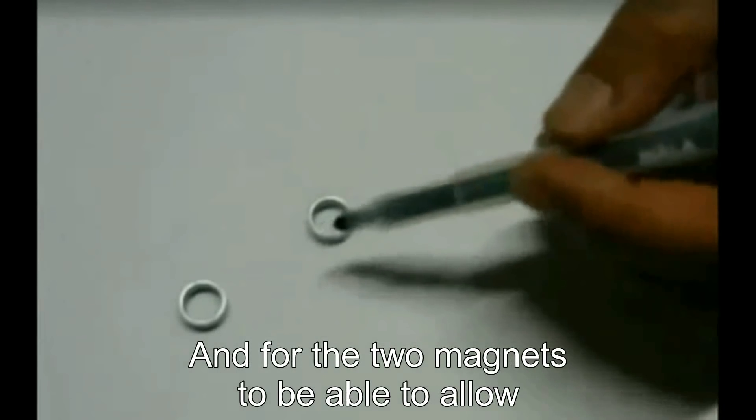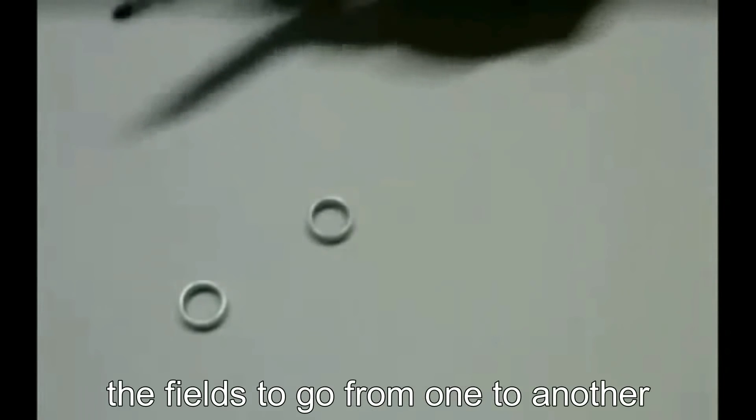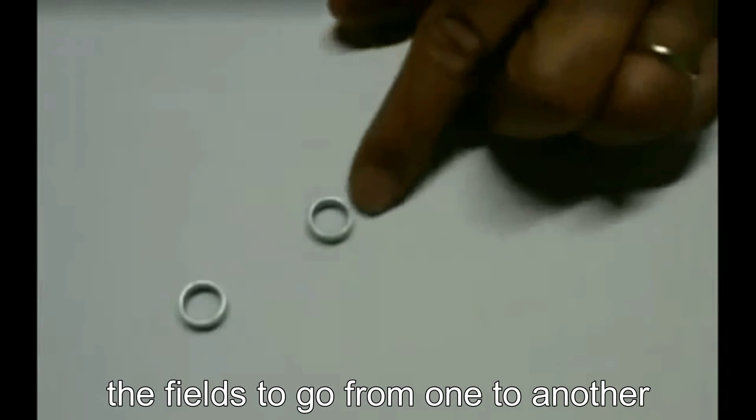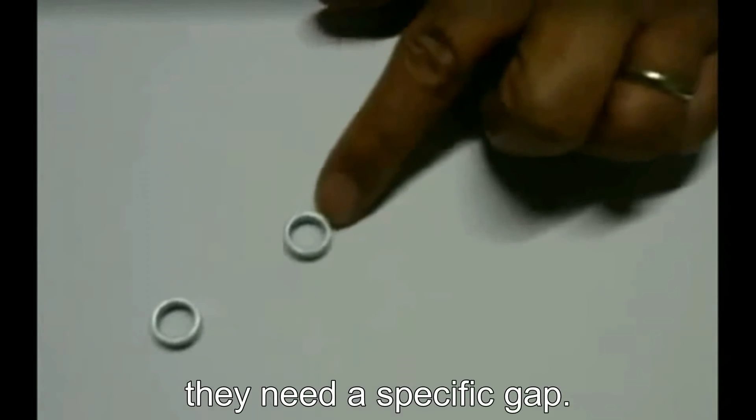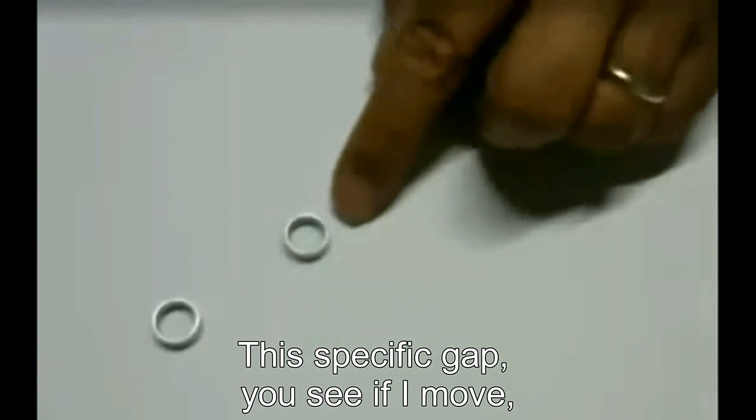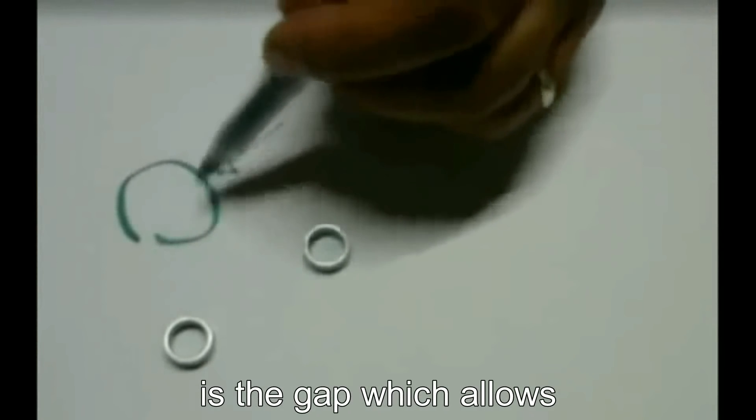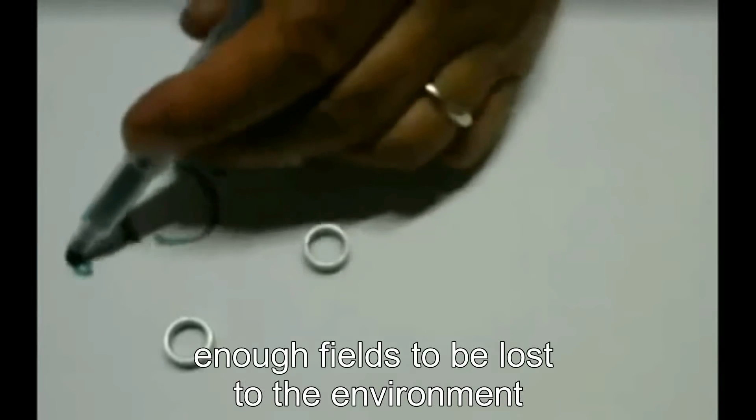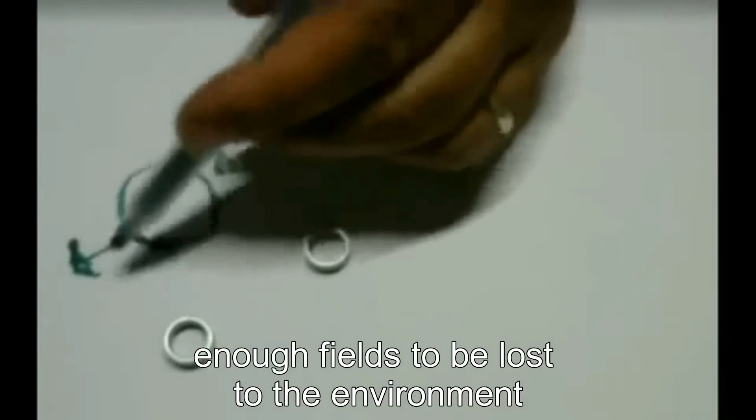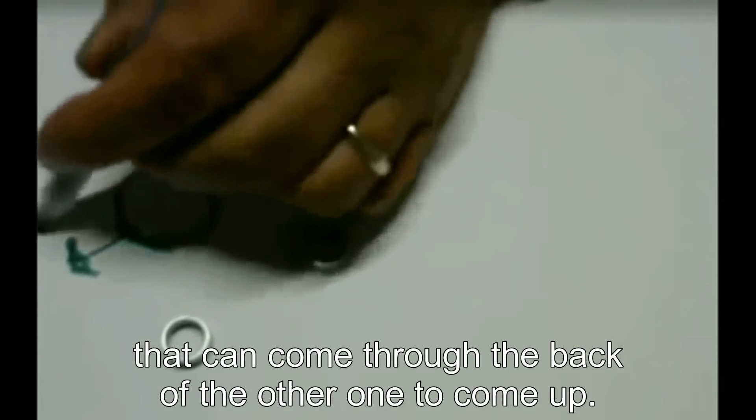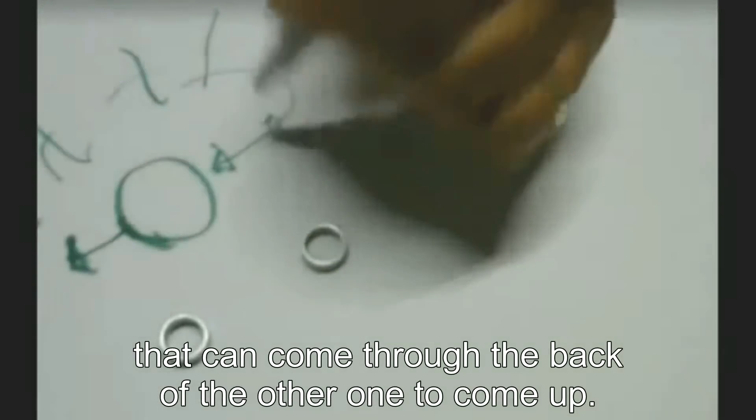And for the two magnets to be able to allow the fields to go from one to another, they need a specific gap. This specific gap - you see, if I move, the other one moves. This gap between the two is the gap which allows enough fields to be lost to the environment and absorbed from the environment that can come through the back of the other one to come up.